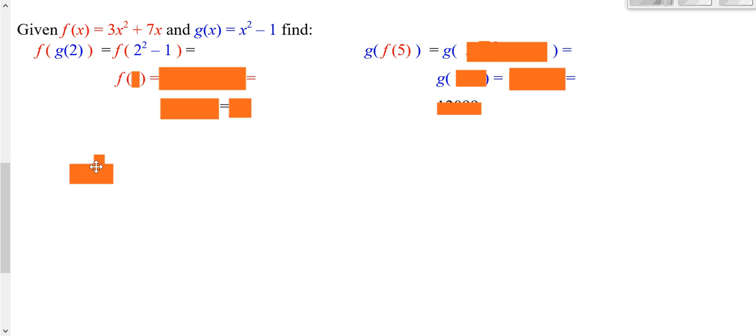So, I've got to go 2 squared minus 1. Well, 2 squared is 4, minus 1 is 3. So, the whole inside in blue simplifies down to 3.